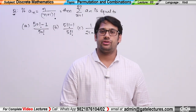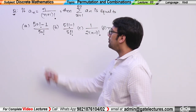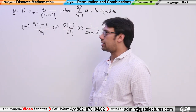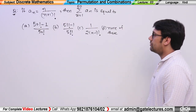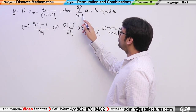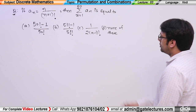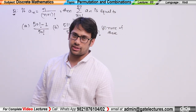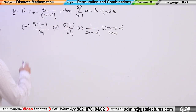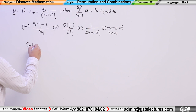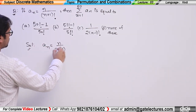This question is similar to the previous one. It states: if a_n is equal to n upon (n+1) factorial, then find the summation from 1 to 50 of a_n. Pause the video, solve it, and then come back to the solution. The given term is a_n = n / (n+1)!